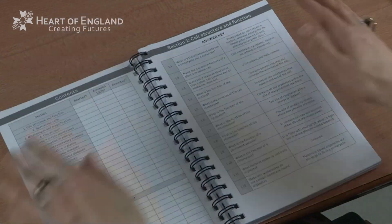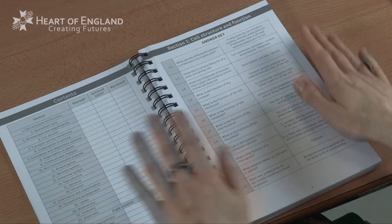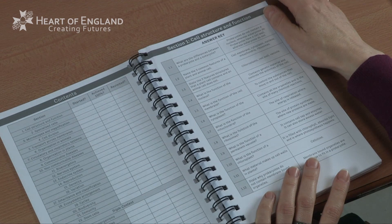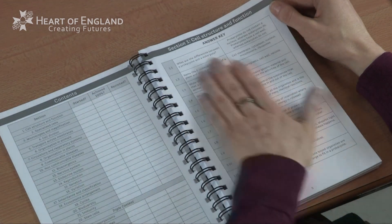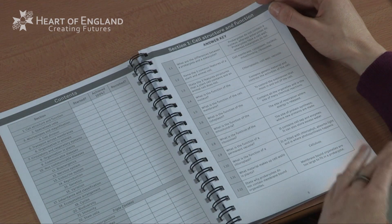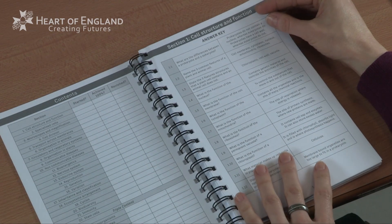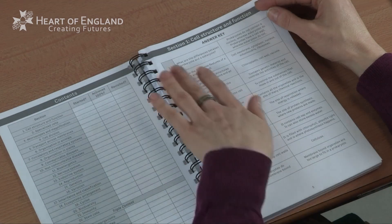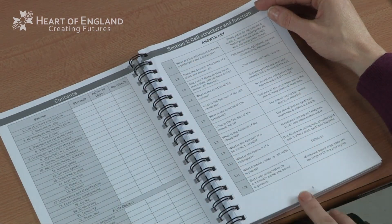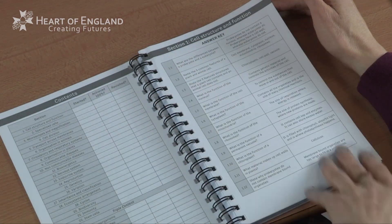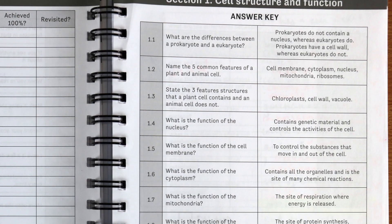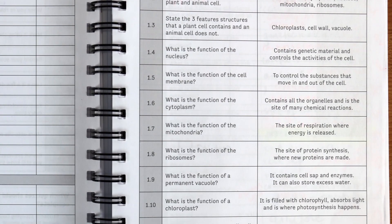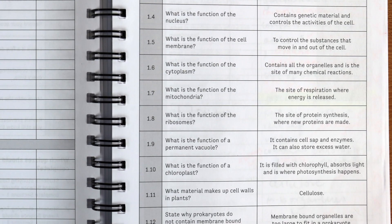The first thing I do is turn over and start with section one, as it tells me, and I've got here the answer key. Now it's not cheating — the best thing to do is to go through and read the questions and the answer key. This is especially important for me because I haven't studied biology since 1992.